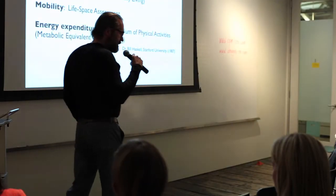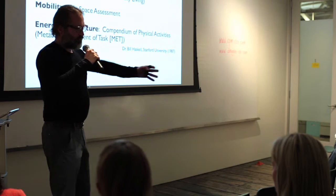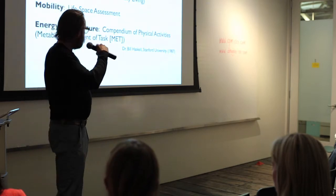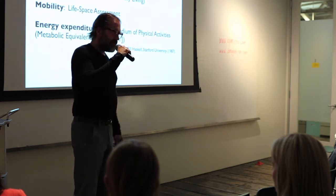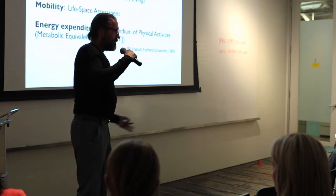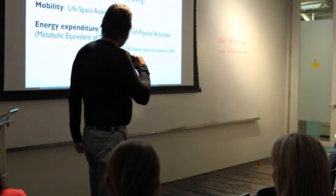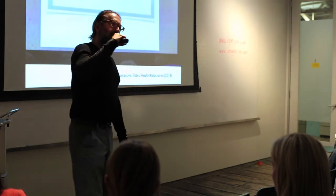We can look at mobility through the life space assessment — how many levels away from the bedroom someone gets. Energy expenditure — that work was done here at Stanford. A compendium of physical activities gives us a MET score that we can standardize and use in research. I went to a presentation that Fitbit gave, and I liked it so much I used my cell phone camera to take pictures of their slides. And if somebody took a picture of my picture of their slides, I think that would be kind of funny.